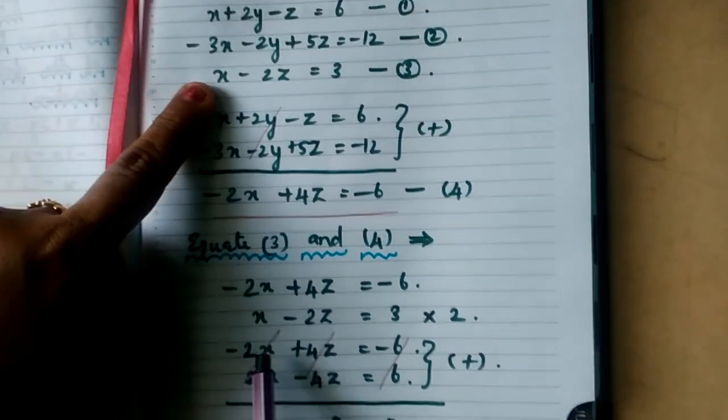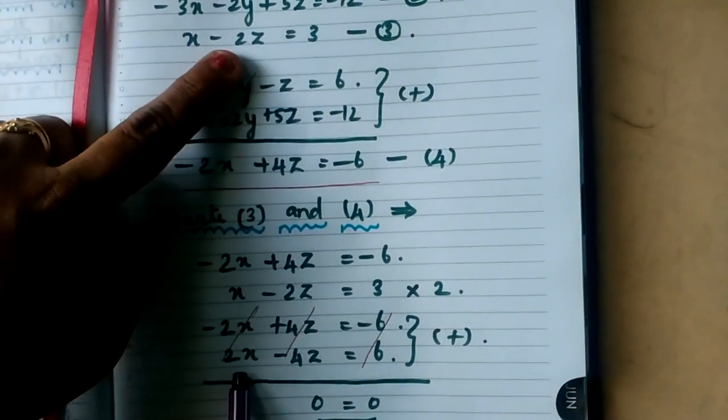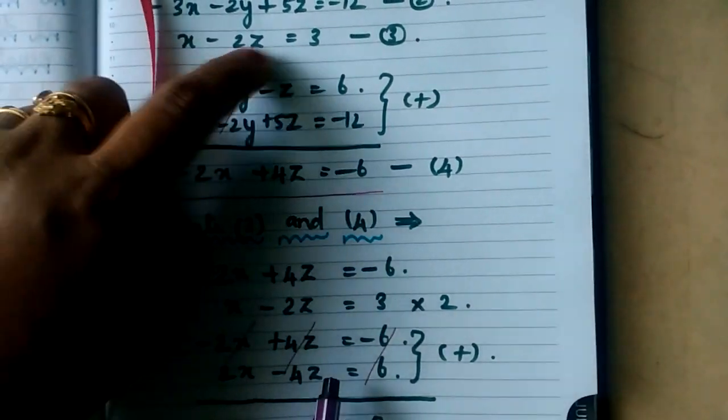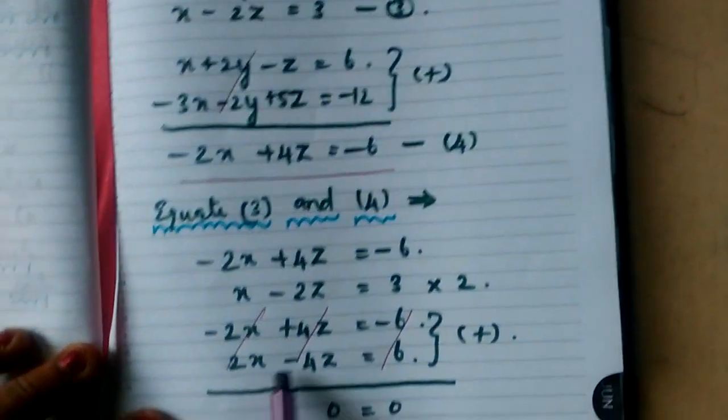Understood, children? So X into 2 become 2X, minus 2Z into 2 become minus 4Z, 3 into 2 become 6. At last, finally, listen here.